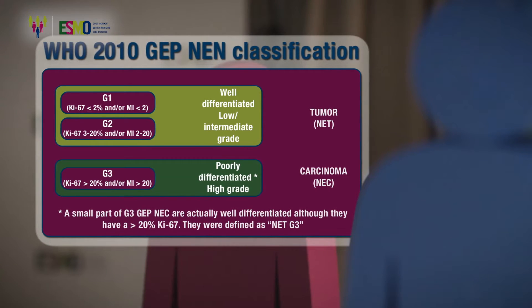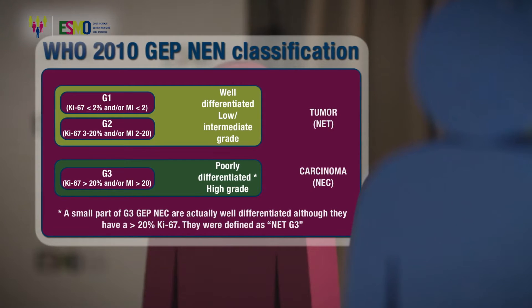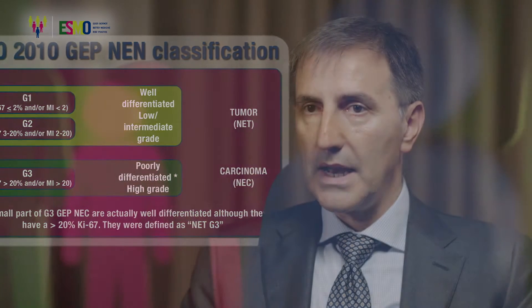More than 20% Ki-67 represents the high-grade or poorly differentiated carcinomas. The lung 2015 WHO classification is based on the mitotic index and necrosis.